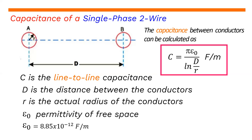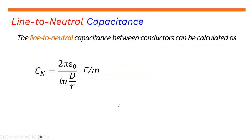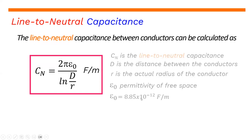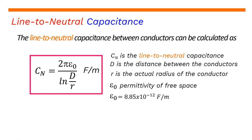Here, epsilon zero is the permittivity of free space, which has a value of 8.85 times 10 to the negative 12 farads per meter. For the line-to-neutral capacitance, C sub n equals 2 pi epsilon zero over ln(d/r) farads per meter, where d is the distance between conductors and r is the actual radius of the conductor.